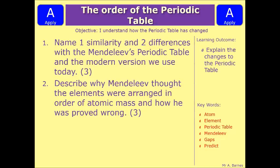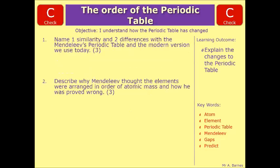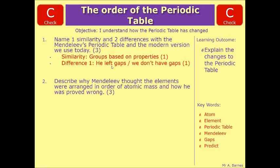Okay, let's have a look. So if we start off with question one, it says, name one similarity and two differences with Mendeleev's periodic table. The similarity was, of course, the fact that he put it into groups based on properties, so you've got one mark for that. Then the two differences, it doesn't matter which order you put them, the first one is that he left gaps, or we don't have any gaps, you can say it either way. And then the second one was the fact that his was in order of atomic mass, ours is atomic number. Hopefully you've got three out of three there.